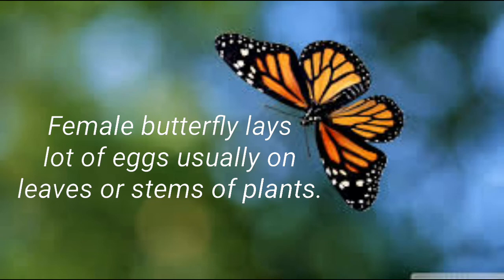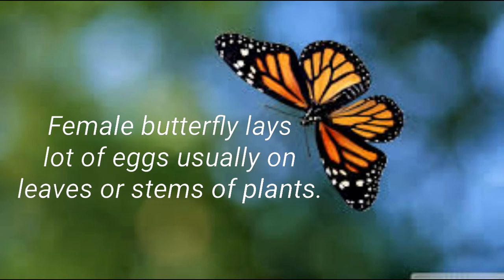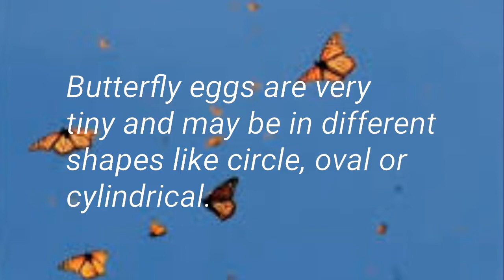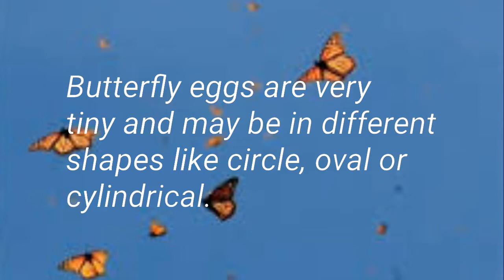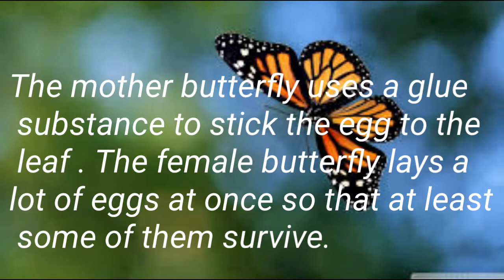Stage 1: The Egg. The female butterfly lays a lot of eggs, usually on leaves or stems of plants. Butterfly eggs are very tiny and may be in different shapes like circle, oval, or cylindrical. The mother butterfly uses a glue-like substance to stick the eggs to the leaf. The female butterfly lays a lot of eggs at once so that at least some of them will survive.